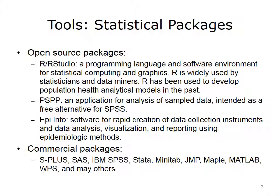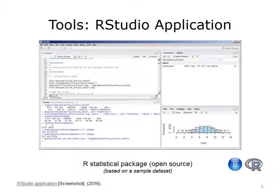Statistical packages are commonly used to develop predictive models in population health analytics. Open-source statistical packages include R, PSPP, EpiInfo, and others. Commercial packages include S-Plus, SAS, IBM SPSS, Stata, Minitab, JMP, Maple, MATLAB, WPS, and many others. Note that none of these statistical packages is specifically designed for population health analytics, but most of them can be easily adopted to develop predictive models for population health.